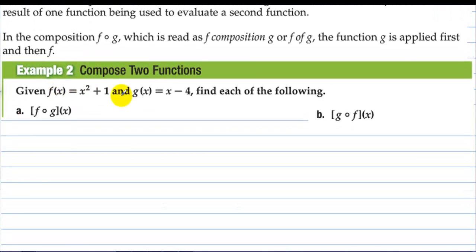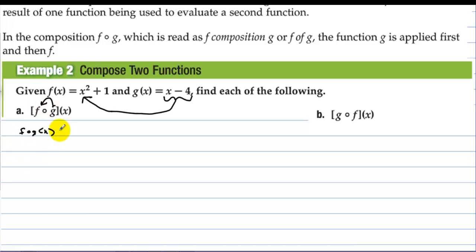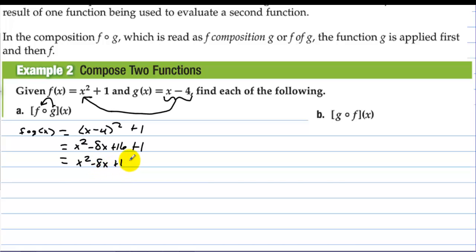Given f and g, we take the inside function g, which is x minus 4, and plug it into f. So f(g(x)) equals (x minus 4) squared plus 1. Multiplying out gives x squared minus 8x plus 16 plus 1, which equals x squared minus 8x plus 17. There are no restrictions on the domain — no radicals and no denominators.